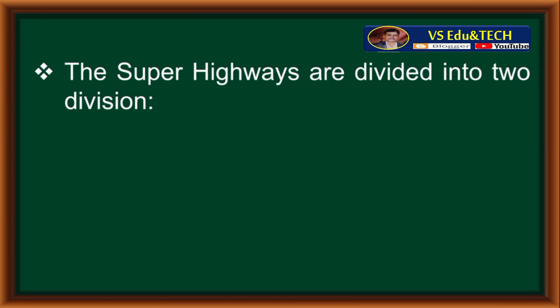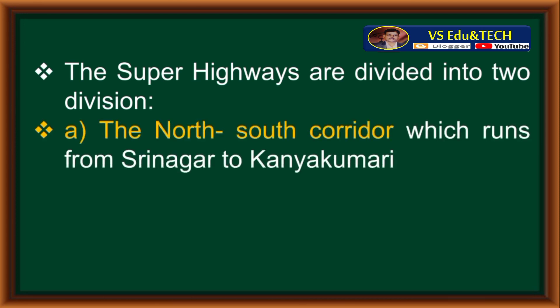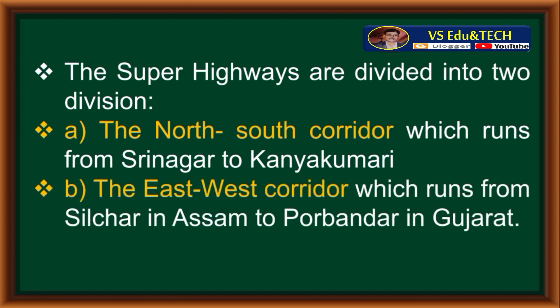The super highways are divided into two divisions. First: the north-south corridor, which runs from Srinagar to Kanyakumari. Second: the east-west corridor, which runs from Silchar in Assam to Porbandar in Gujarat.